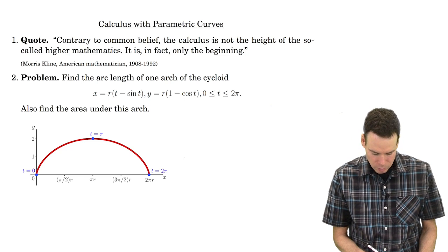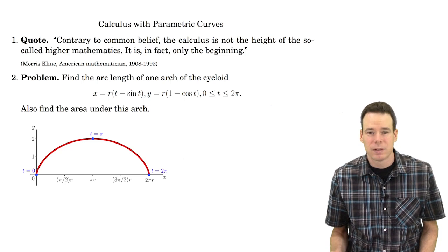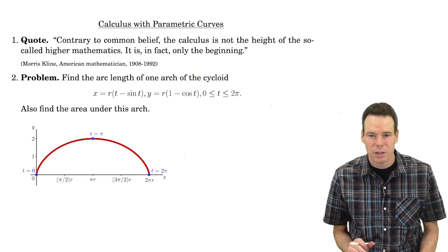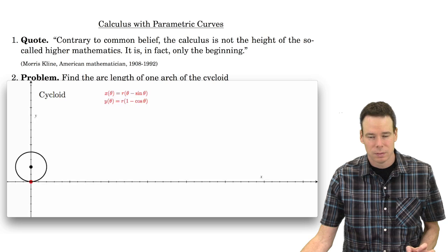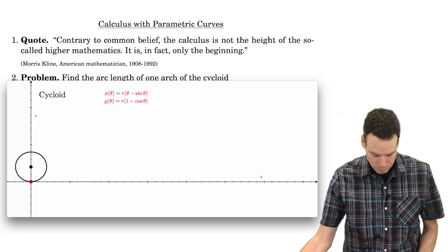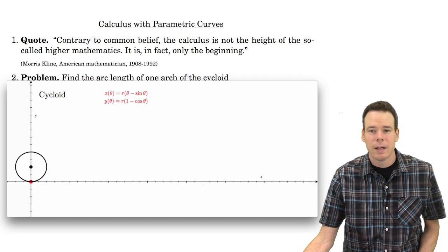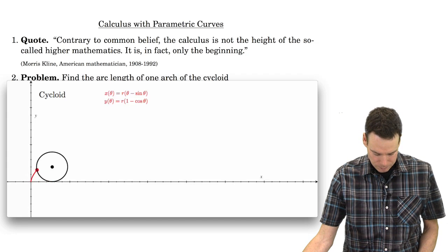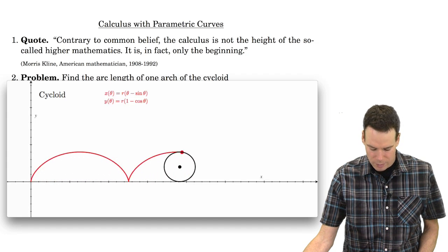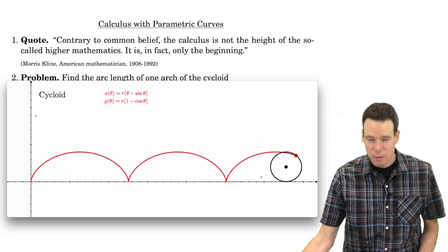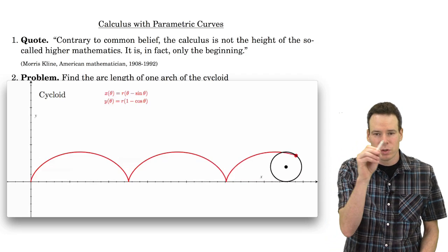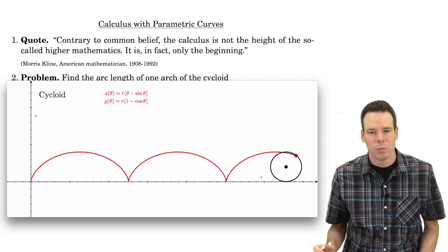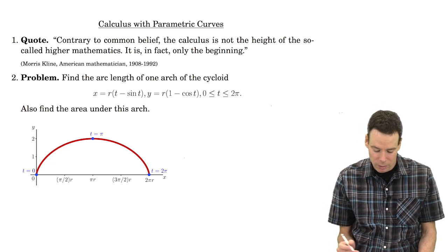Let's dive right in with an example. We are looking to compute the arc length of one arch of a cycloid and also find the area under this arch. A cycloid is obtained by taking a circle, identifying a point on it — here you see a red point at the origin — and letting the circle roll without slipping, then watching what curve that point traces out. The resulting curve is known as a cycloid, and we're interested in just one of those arches: what is its length and what is the area under it?